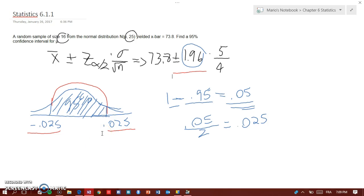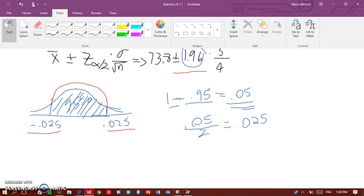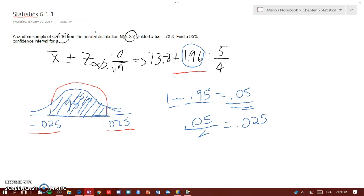So here is asking for the 95% confidence interval for μ. So that would be equal to 71.35 comma 76.25.